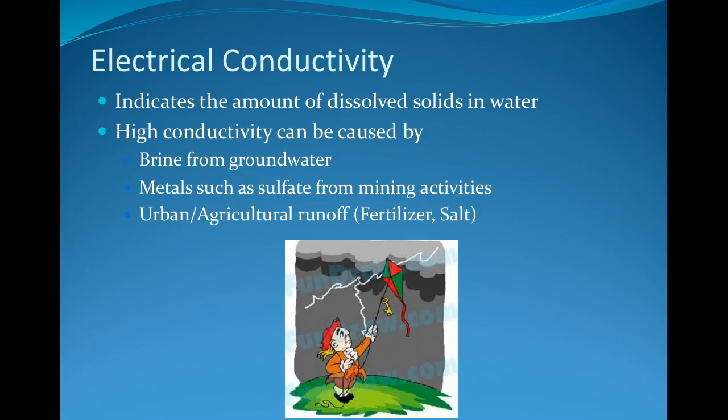Electroconductivity indicates the amount of dissolved solids that are in the water. High conductivity can be caused by brine from groundwater, metals such as sulfate from mining activities, and urban and agricultural runoff such as fertilizers and salts.